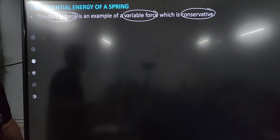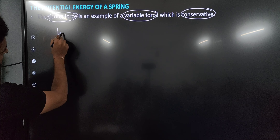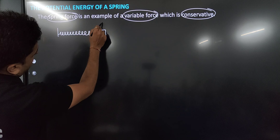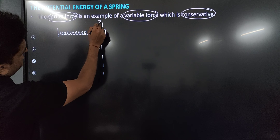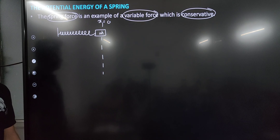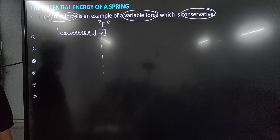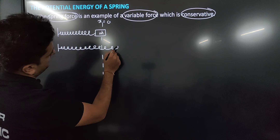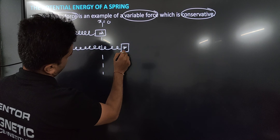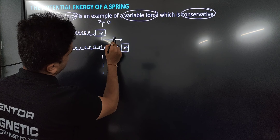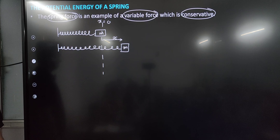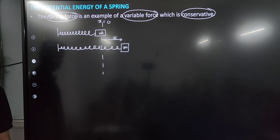Suppose we have a spring attached with some mass m, and this is the natural length of spring — let's say x = 0. This means the spring has neither been pulled nor compressed; this is its natural length. If we extend this spring by x, then obviously energy will be stored inside the spring.